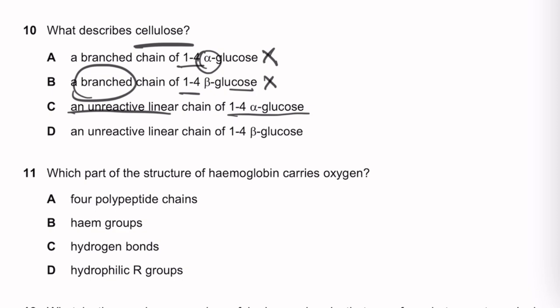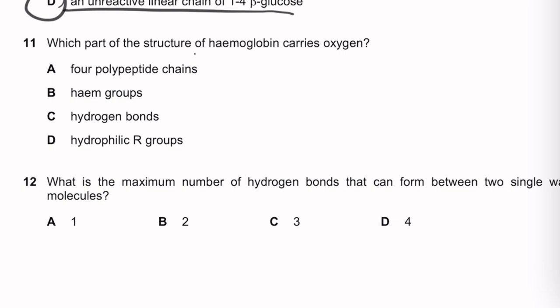Question 11: Which part of the hemoglobin structure carries oxygen? It is the heme group — a permanent, non-amino acid part of the protein, also known as the prosthetic group.